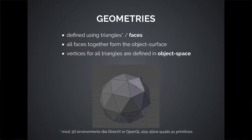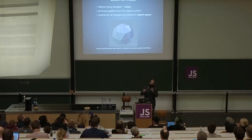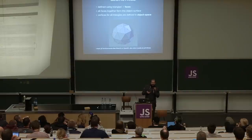The single most important thing in 3D graphics is the geometry. Geometry is defined using triangles, or in some other systems like DirectX, we can also use quads — which are basically rectangles. These are called faces, and all of these faces together form the surface of the object. All of these triangles are described by three points — three vertices — and all vertices share a common coordinate system called the object space. This means you can move the object space around without having to modify any of the vertices, so the shape stays the same while you can move, rotate, and scale it.